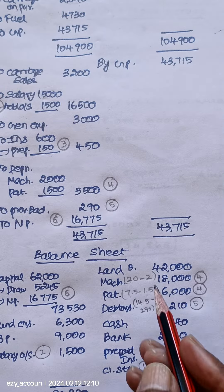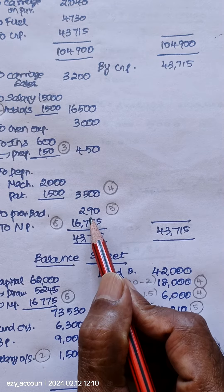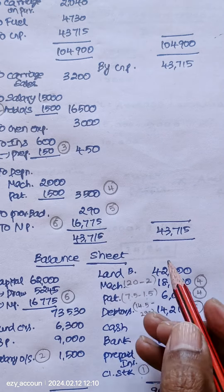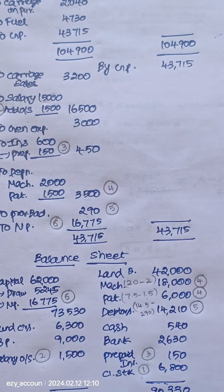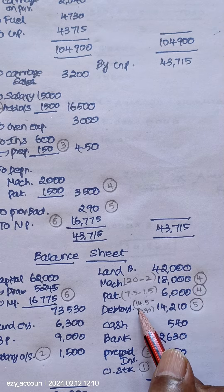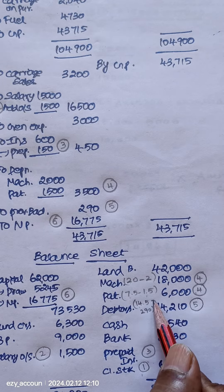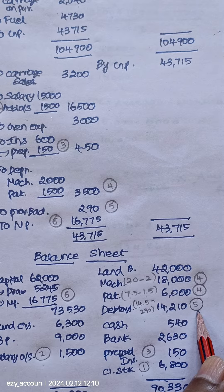Adjustment five is provision for bad debts, which is two percent on debtors — that gives 290 rupees to be charged in the P&L. Similarly, debtors on the balance sheet become 14,500 minus 290 for this adjustment.